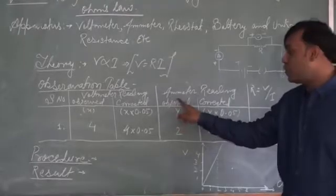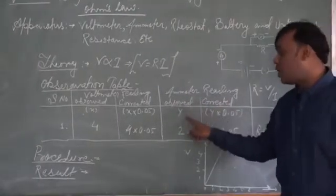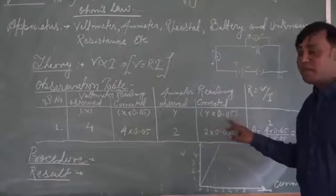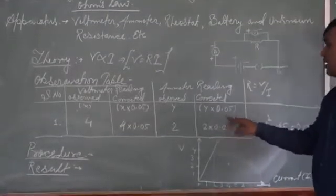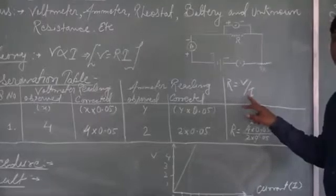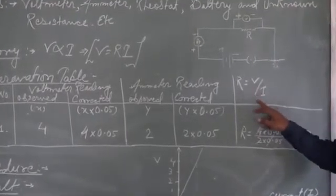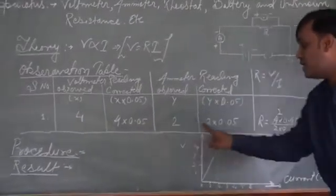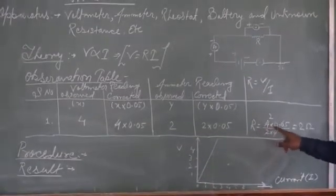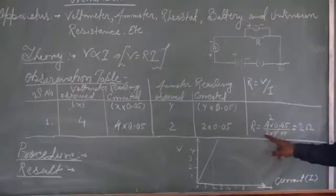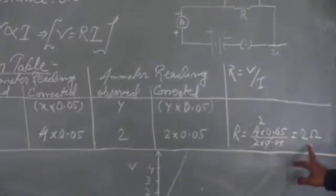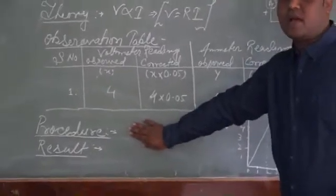We repeat the same for the ammeter reading: we take the original reading and correct it by multiplying by the least count of 0.05. In the last column, we calculate R using Ohm's law: R equals V divided by I, that is potential difference divided by current. For example, R equals 4 × 0.05 divided by 2 × 0.05 — the 0.05 cancels and we get 2 Ohms.